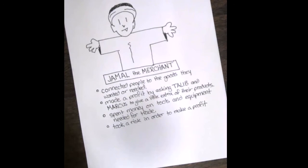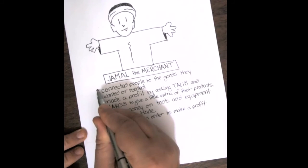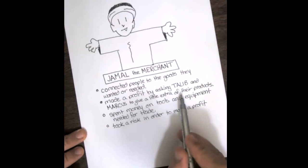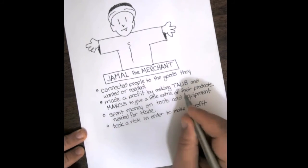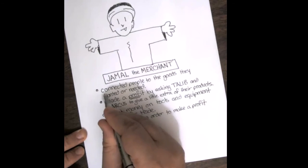Jamal is going to be what we call a merchant. And what this list is basically is a list of what it means to be a merchant. First, Jamal is going to connect people to the goods they want or need. He is going to make a profit by asking Tlaib and Marcus to give a little extra of their products. He is going to spend money on tools and equipment needed for trade, and he is going to take a risk in order to make a profit.